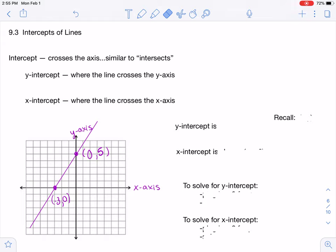The y-intercept is always going to be (0, something), and the x-intercept is always going to be (something, 0).